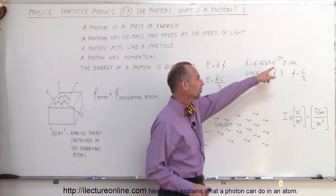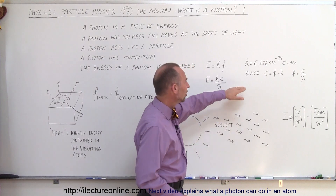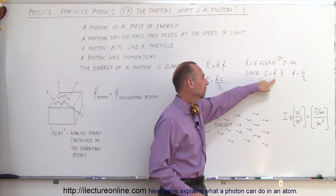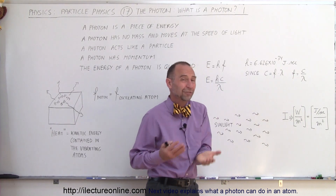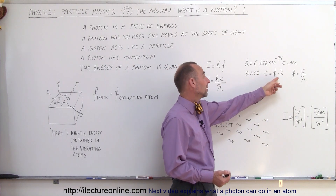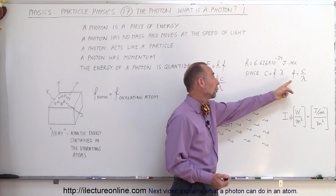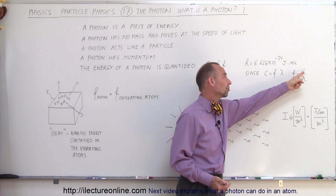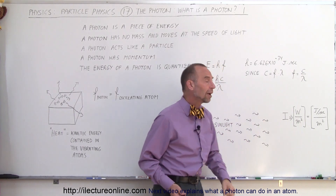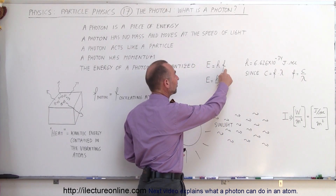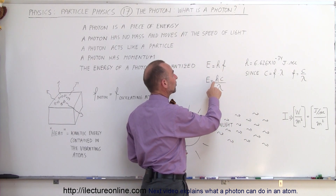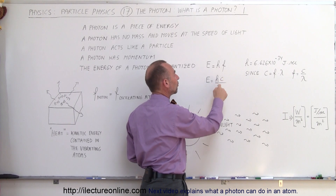Since the speed of light is equal to the frequency times the wavelength — the velocity of any wave equals frequency times wavelength — we can write the frequency as the speed of light divided by the wavelength. So instead of writing H times F, we can write it as H times C over lambda.